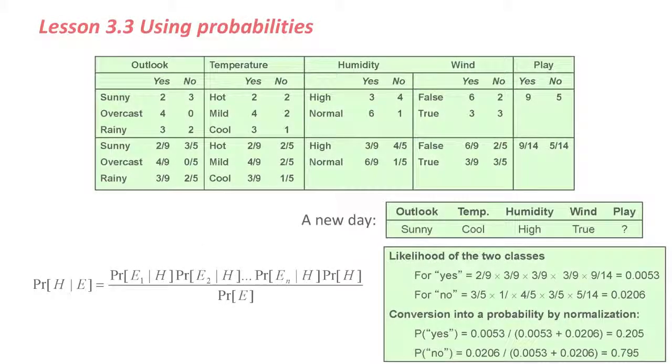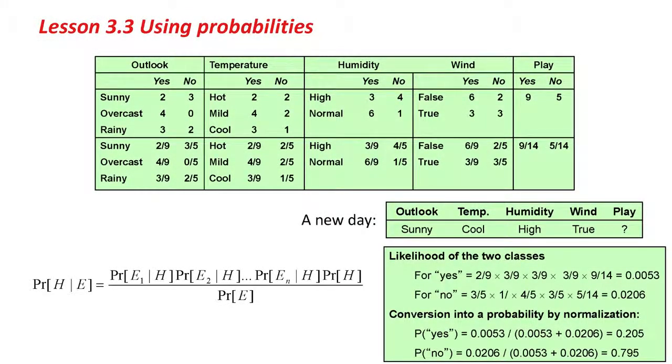Here's an example. Here's an unknown day. A new day. We don't know what the value of play is, but we know it's sunny, cool, high, and windy. Windy is true. We can just multiply up these probabilities. If we multiply for the Yes hypothesis, we get two-ninths times three-ninths times three-ninths times three-ninths. Those are just the numbers on the previous slide. PR, E2, E4. Finally, PR, that is nine-fourteenths, and that gives us a probability of .0053 when you multiply them. And then from the No class, we do the same to get a likelihood of .0206.